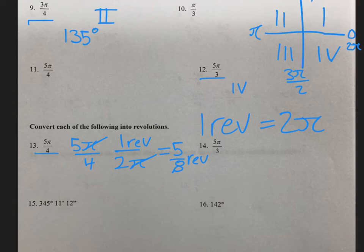Now let's do the same thing with number 14. Again, we have 5π divided by 3. We divide by 2π radians and multiply by 1 revolution. The π's cancel out, so we have 5 thirds times 1 half is equal to 5 sixths revolutions.